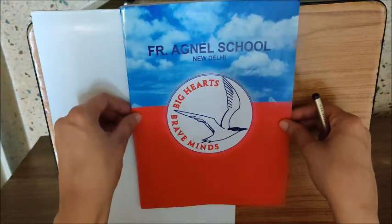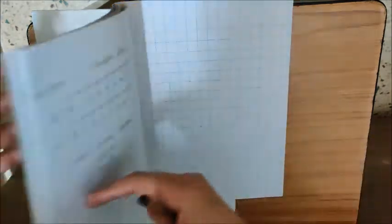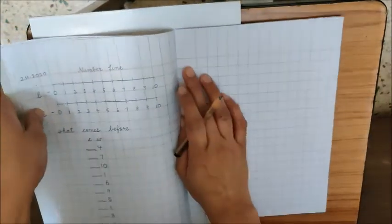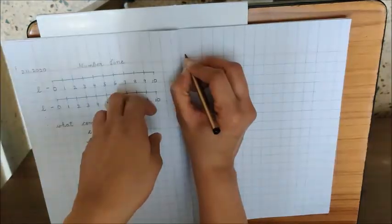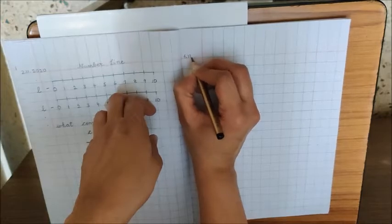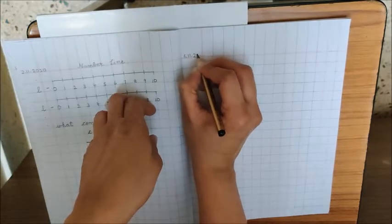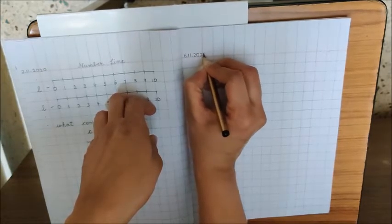Now children, take your maths notebook, open a new page. Here, write down today's date. Today is November 6. 6 dot, 11 dot, 20, 20.